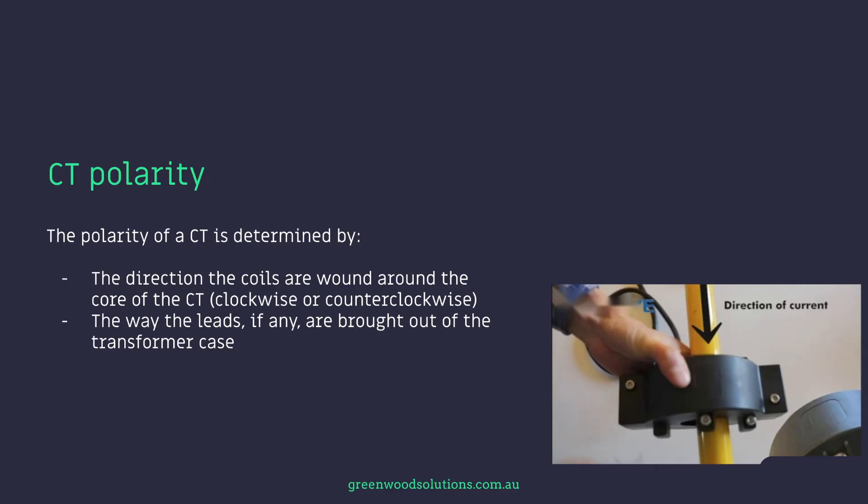The polarity of a CT is determined by the directions the coils are wound around the core of the CT — clockwise or counterclockwise — and the way the leads, if any, are brought out of the transformer case.